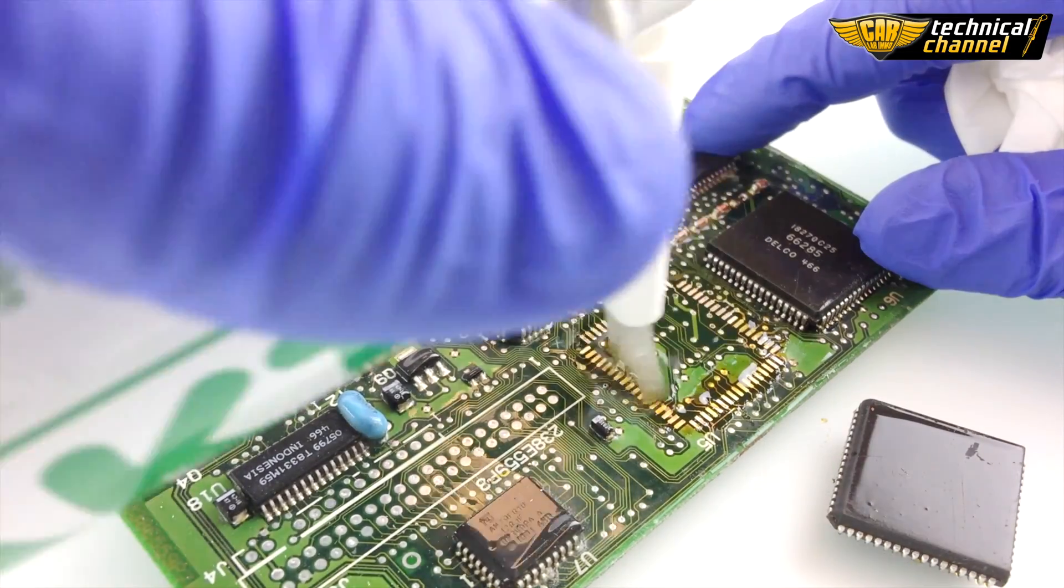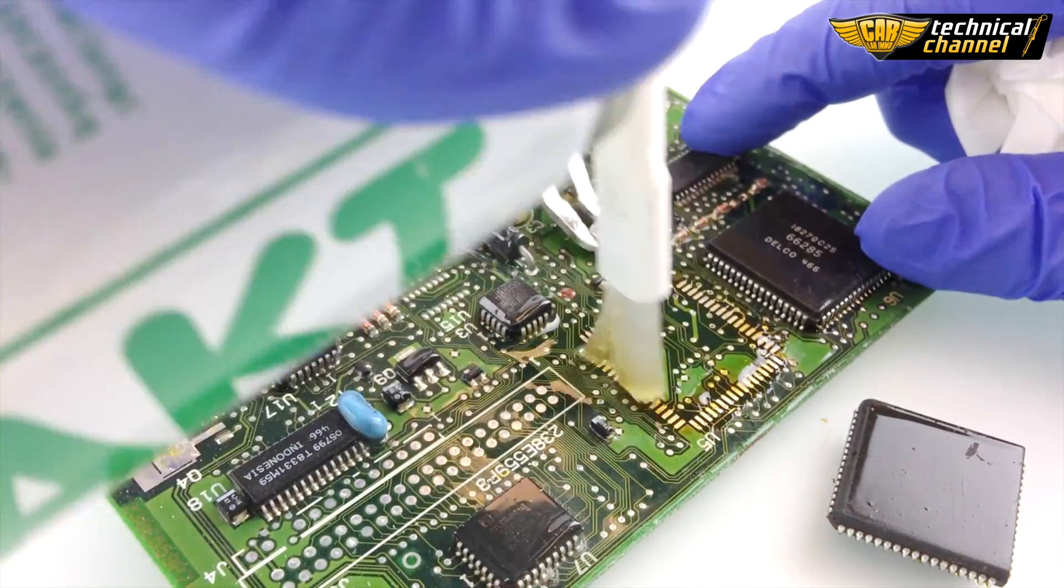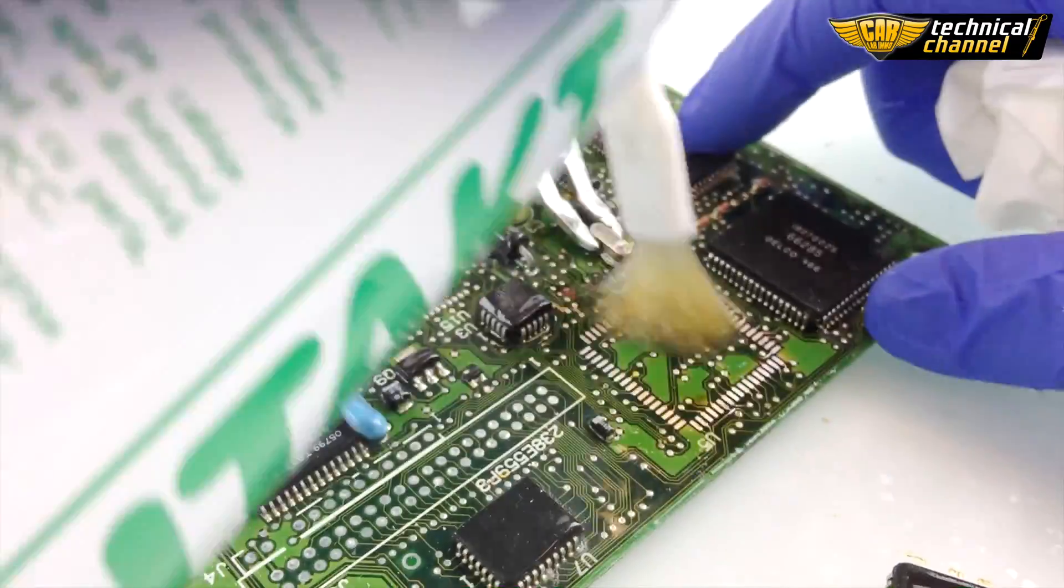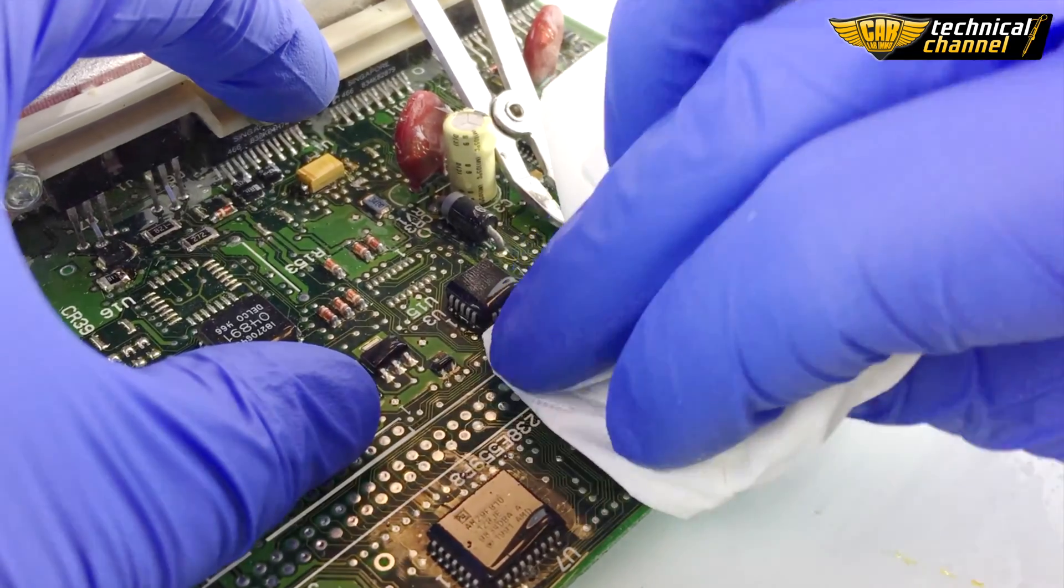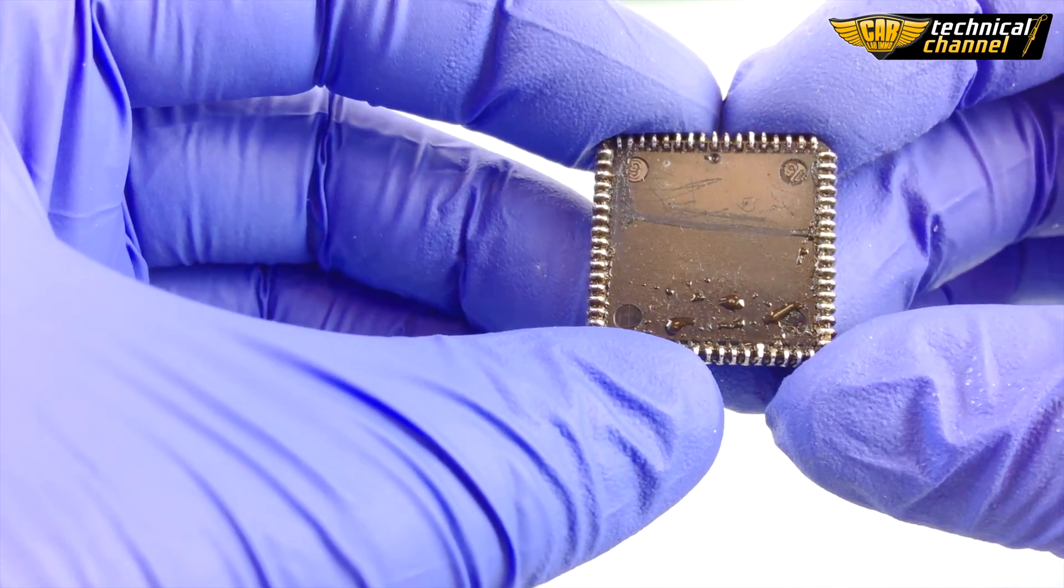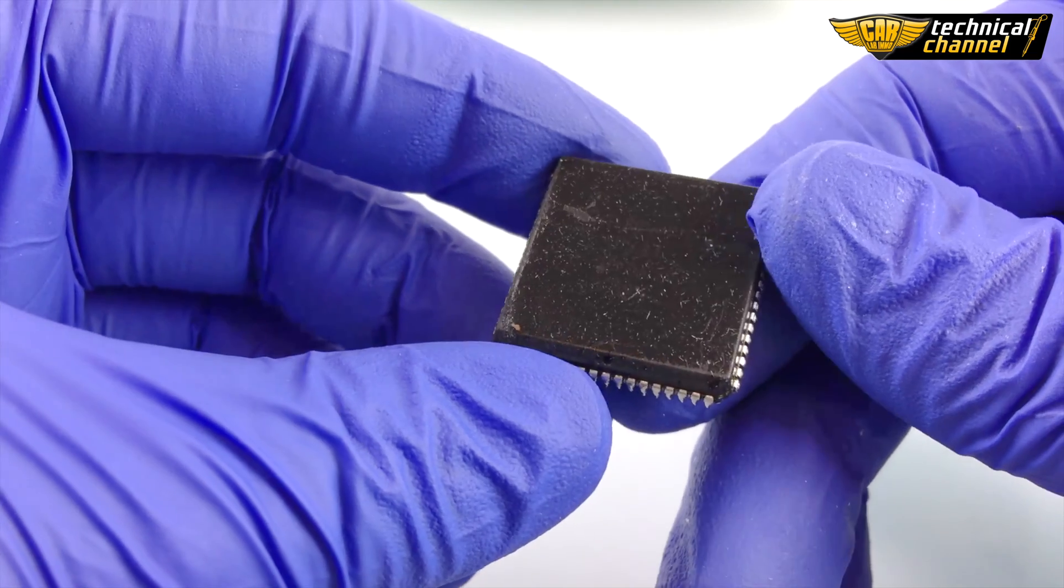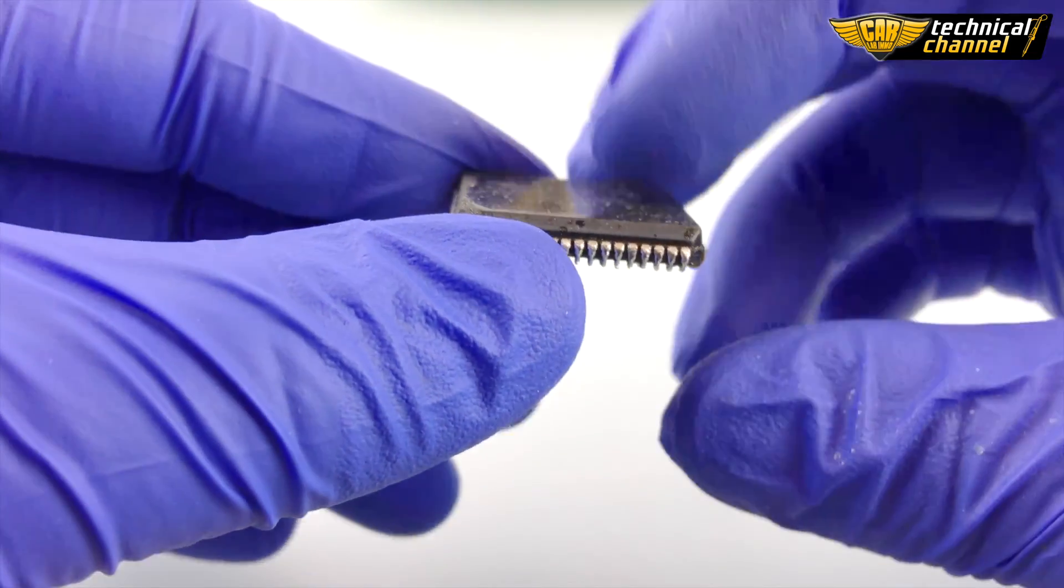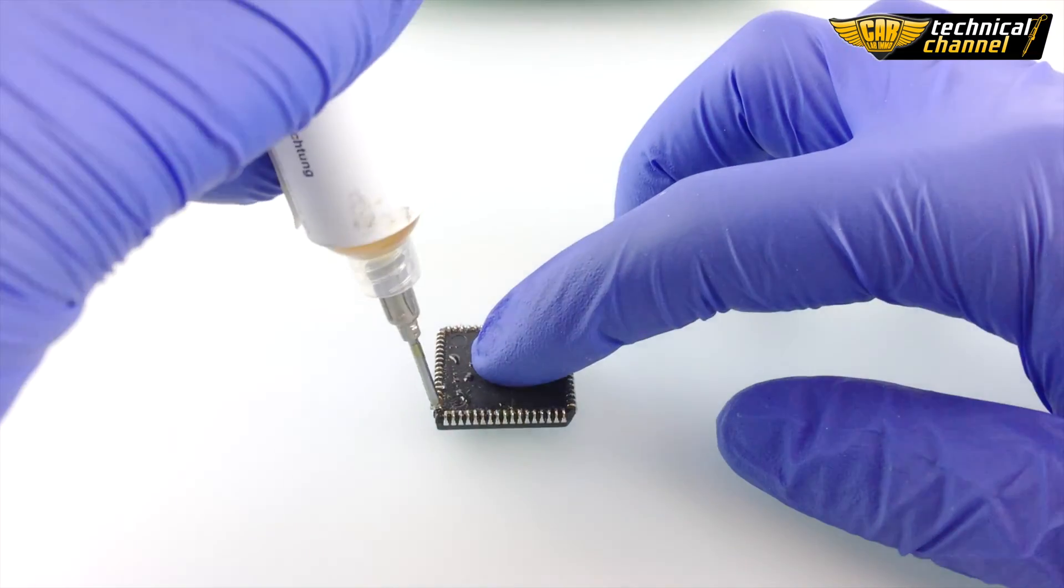Clean the place with PCB cleaner and dry with a paper towel. Now clean the processor's legs. Take the excess tin with the iron gun.